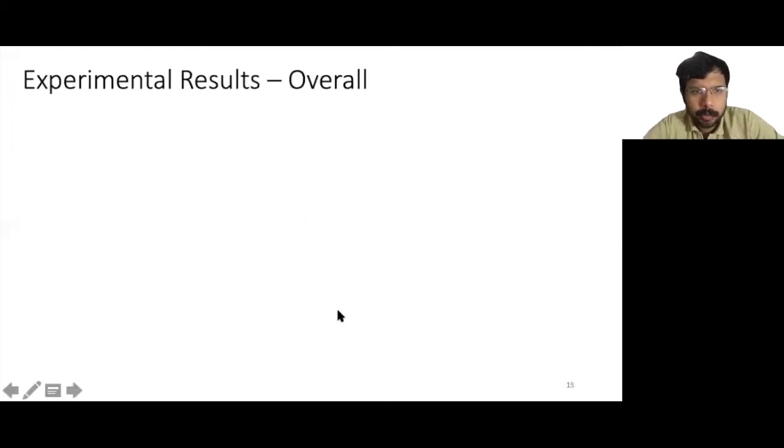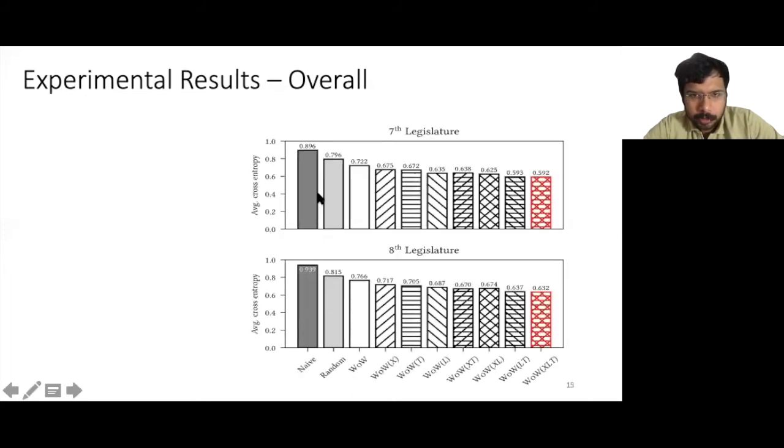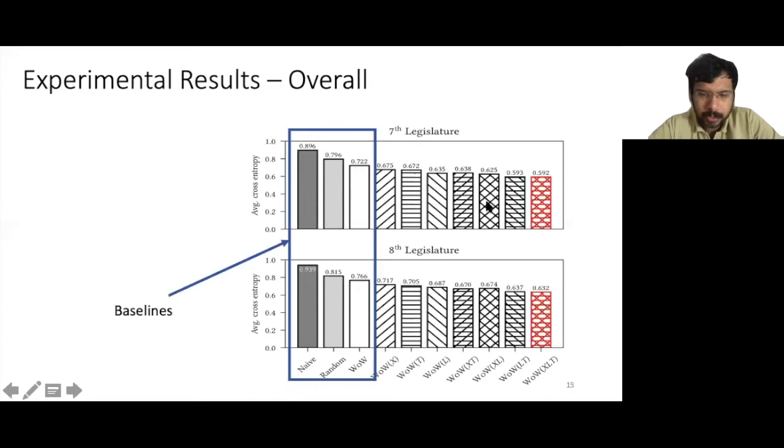First we'll present the overall predictive performance. These two bar plots show the predictive performance for the two legislatures. The first three bars on the left are the baselines, and the models are arranged from left to right in order of increasing complexity. We see that all our enriched models outperform the baselines, and the BAU XLT model that combines explicit latent and text features is the most complex model on the right. It performs best.